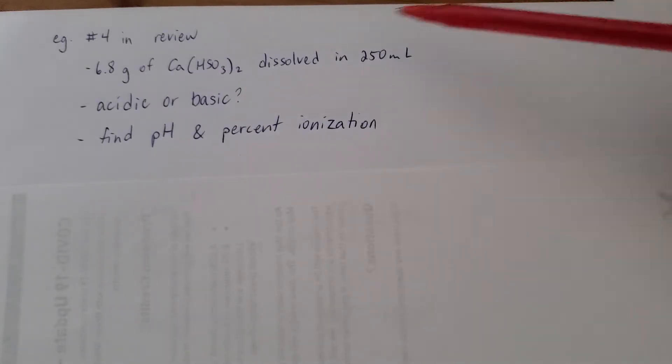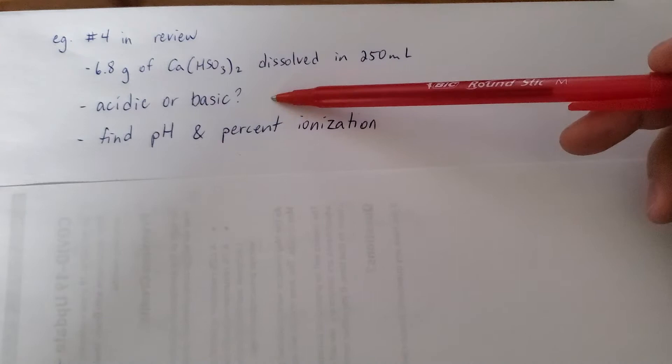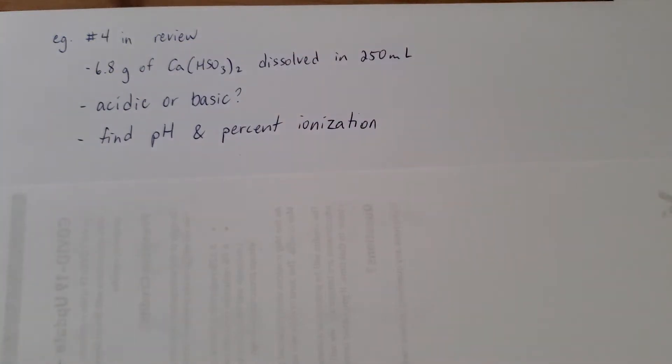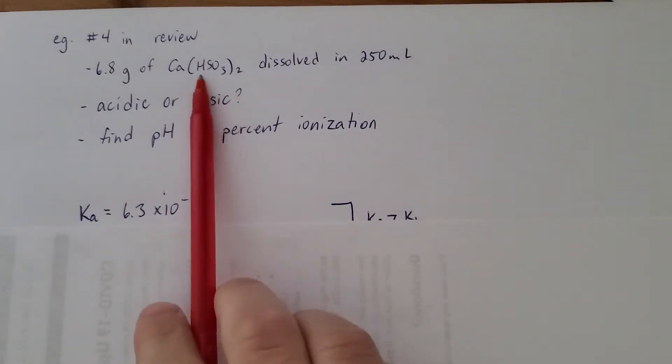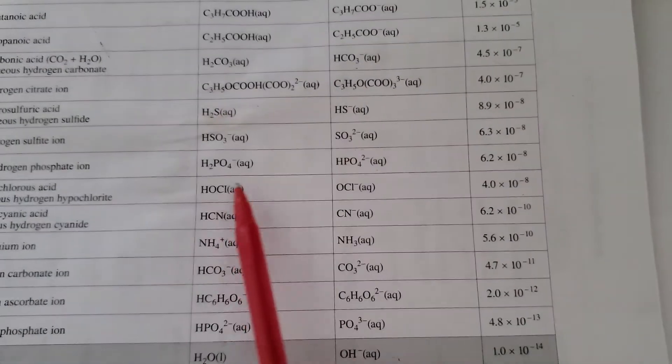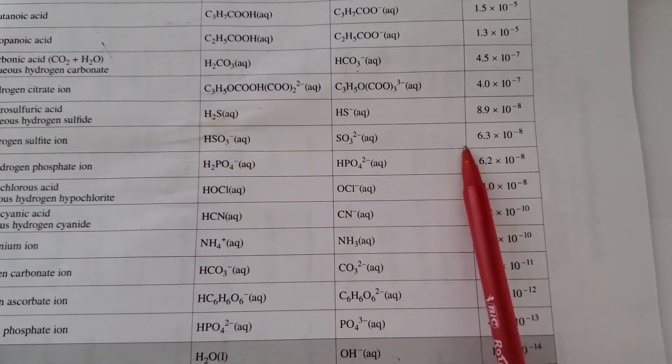All right, the first thing that we can address very quickly is this question of whether the solution will be acidic or basic. So we just have to compare Ka and Kb. I found Ka pretty quickly. Just so we're clear, this dissociates into HSO3- and calcium ions. So I find HSO3-. It's right here. There's Ka.